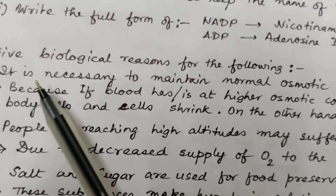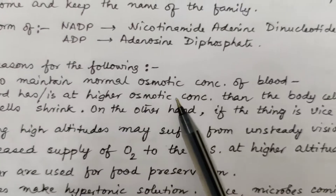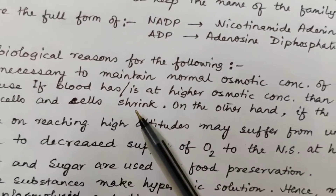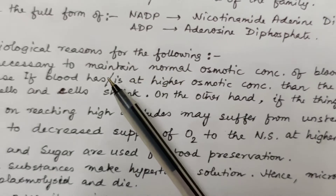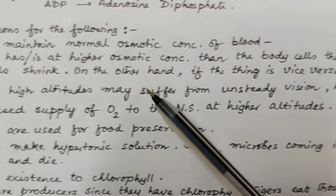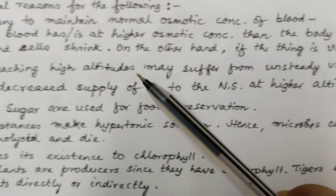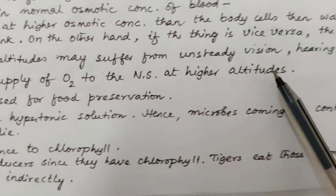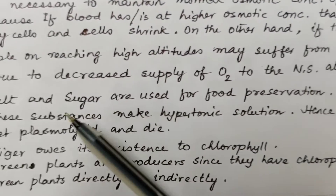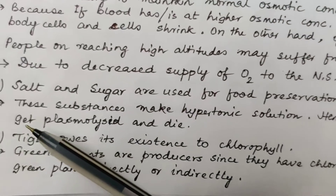Give biological reasons for the following. Number one: it is necessary to maintain normal osmotic concentration of blood because if blood is at higher osmotic concentration than the body cells, water will diffuse out from the body cells and the cells will shrink. If vice versa, the body cells will swell. Number two: people reaching high altitudes may suffer from unsteady vision, hearing loss and complete blackout due to decreased supply of oxygen to the nervous system. Number three: salt and sugar are used for food preservation as they make a hypertonic solution, so microbes coming in contact get plasmolyzed and die.